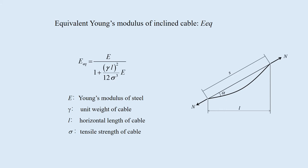The inclined stay cable has a sag caused by the self-weight, as shown here. When it is pulled with N at the ends, it extends more than that of the vertical cable which has no sag. In other words, the Young's modulus of the inclined stay cable with a sag is smaller than that without the sag. This smaller Young's modulus is called the equivalent Young's modulus EEQ, which is obtained by this equation, where E is Young's modulus of steel, gamma unit weight of cable, L horizontal length of cable, and sigma tensile strength of cable.